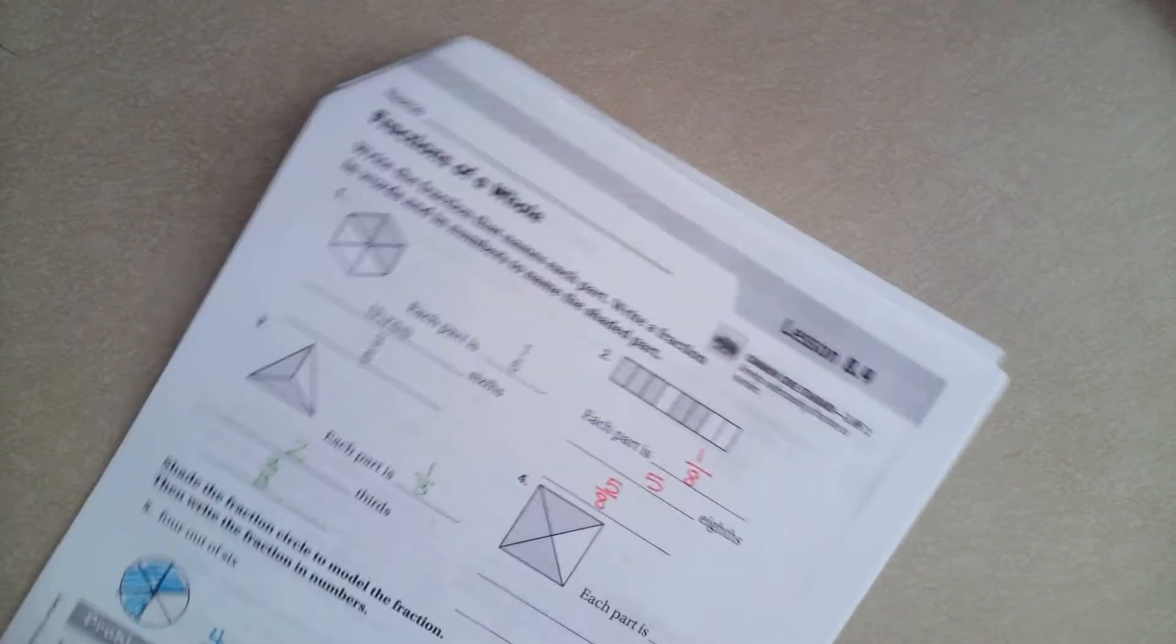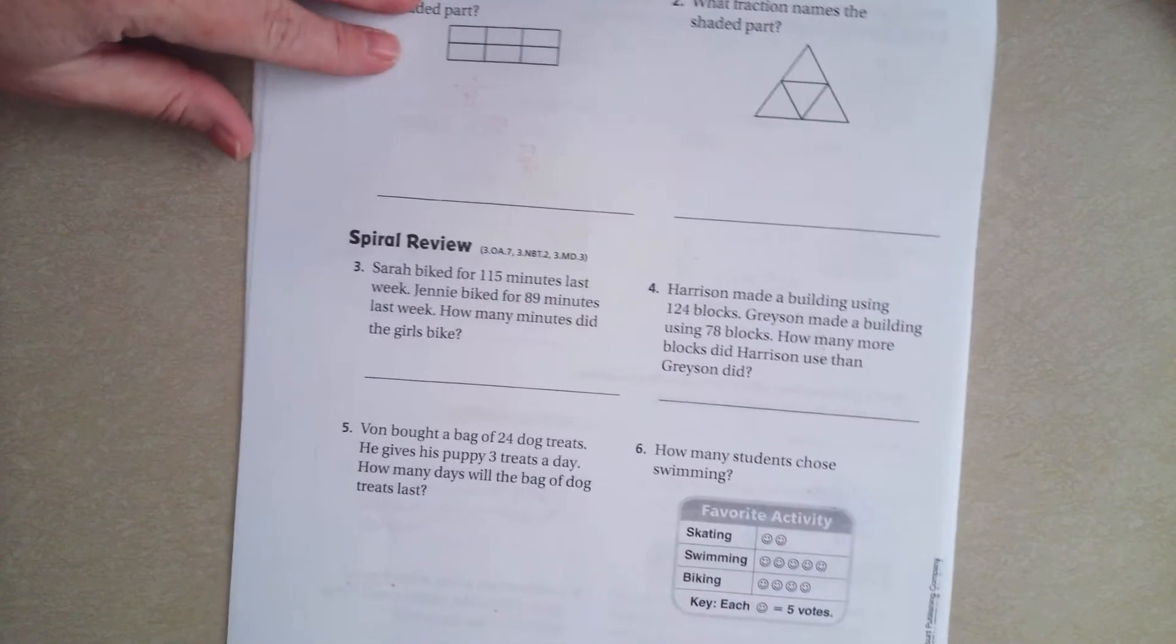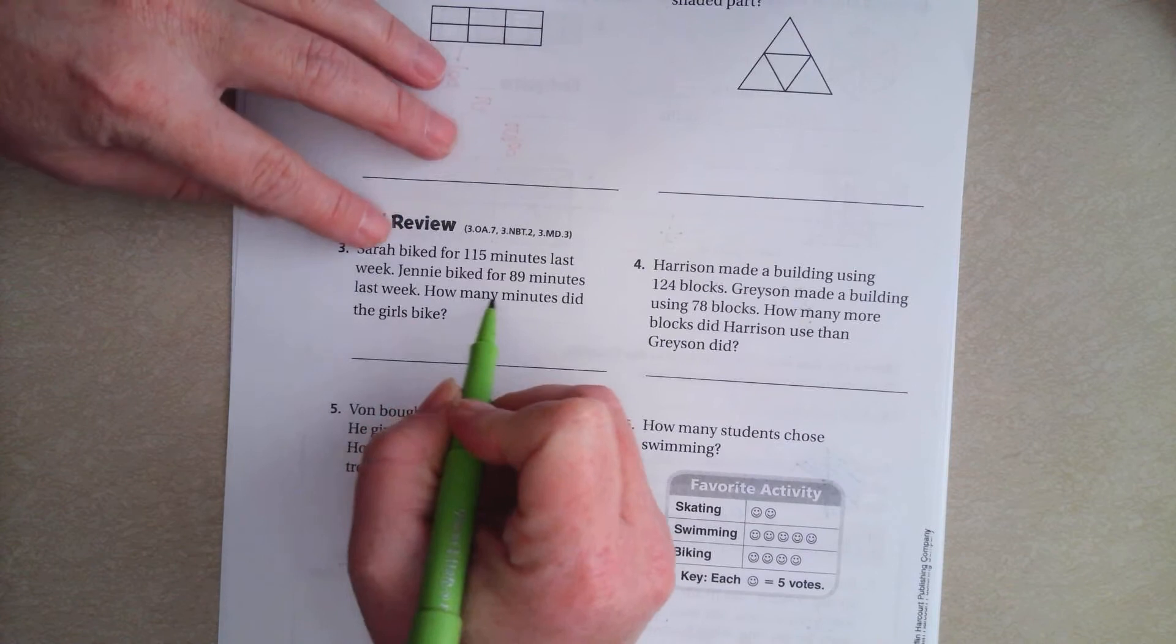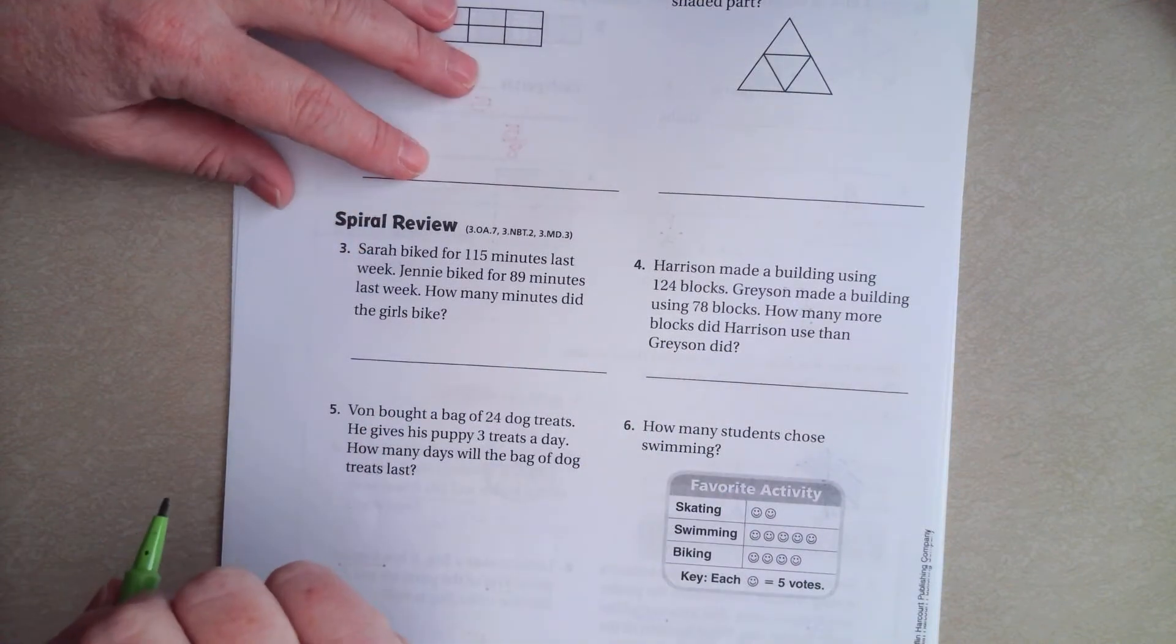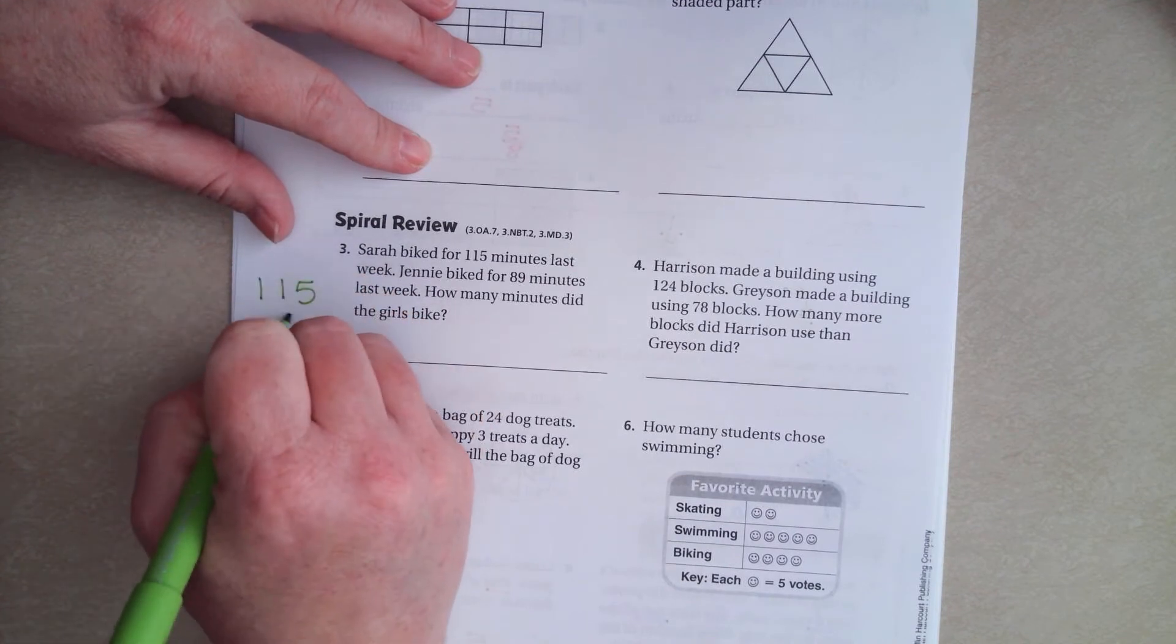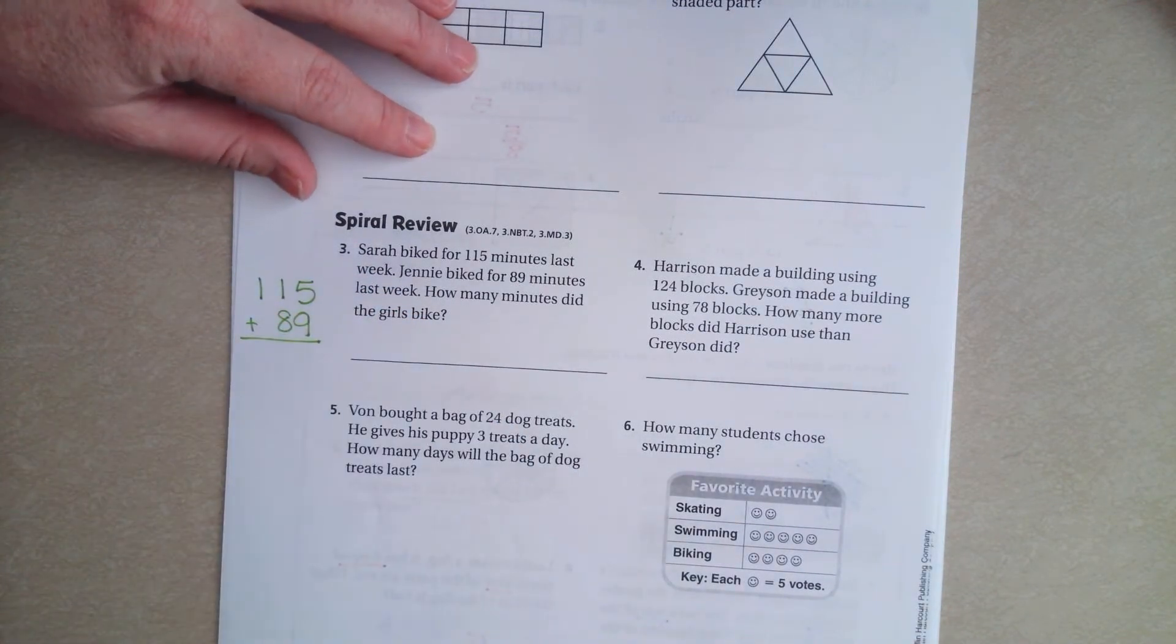We're going to go over onto the back where you guys are going to do the lesson check, just like always. And we're going to go down to this spiral review. It says, Sarah biked for 115 minutes last week. Jenny biked for 89 minutes last week. How many minutes did the girls bike? So, that sounds like a how many in all, which means we're going to go ahead and add.